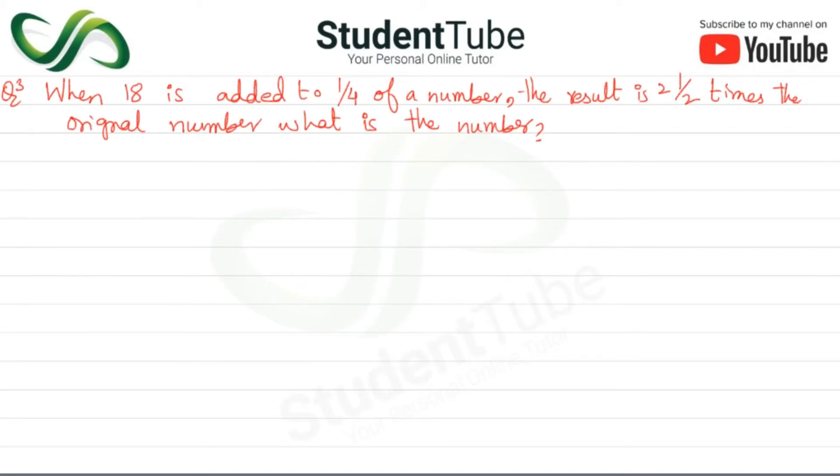Question 3: When 18 is added to 1/4 of a number, the result is 1/2 times the original, i.e. 2.5 times the original number. What is the number? Now we will again suppose...